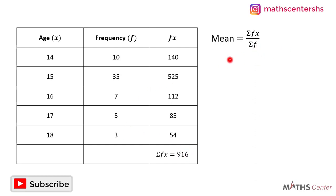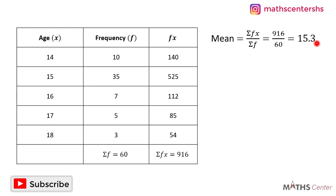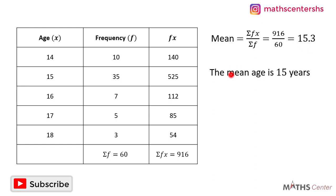We need sigma f, so we add all the f values: 10 plus 35 plus 7 plus 5 plus 3, which is 60. So the mean equals 916 divided by 60, which gives us 15.3. The question asked us to correct our answer to the nearest whole number, so 15.3 rounds to 15. The mean age is 15 years.